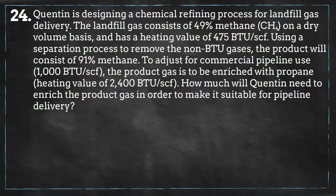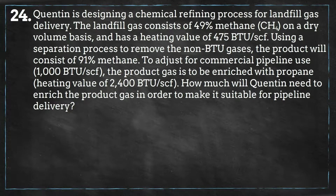Quentin is designing a chemical refining process for landfill gas delivery. The landfill gas consists of 49% methane on a dry volume basis and has a heating value of 475 BTU per standard cubic foot. Using a separation process to remove the non-BTU gases, the product will consist of 91% methane. To adjust for commercial pipeline use, the product gas is to be enriched with propane. How much will Quentin need to enrich the product gas in order to make it suitable for pipeline delivery?